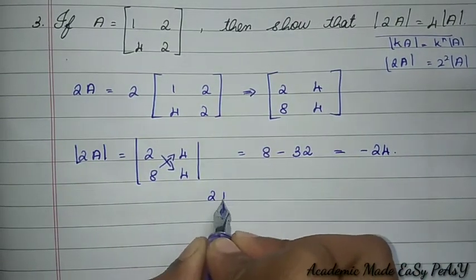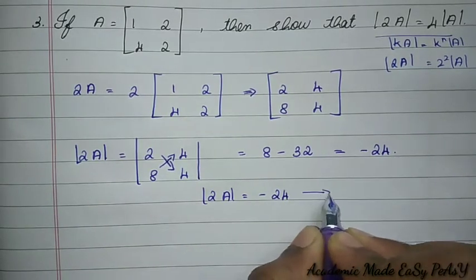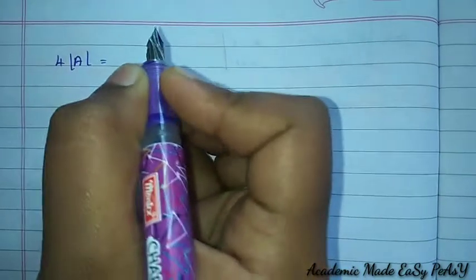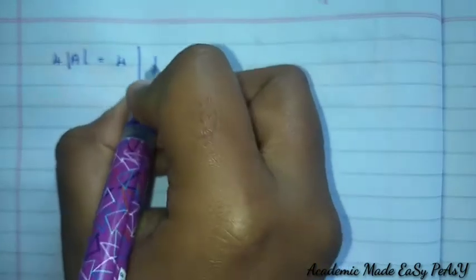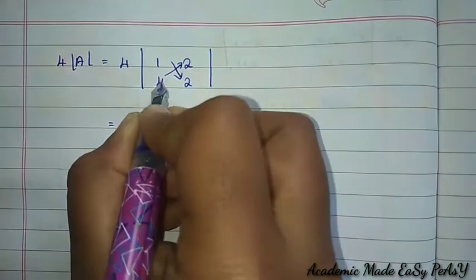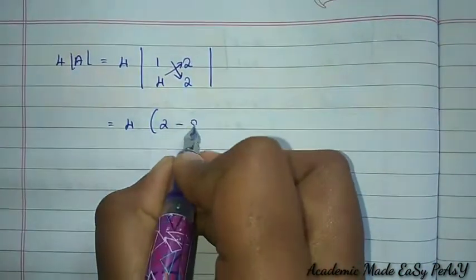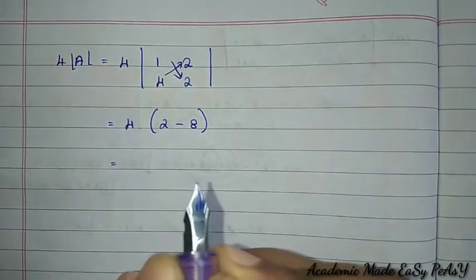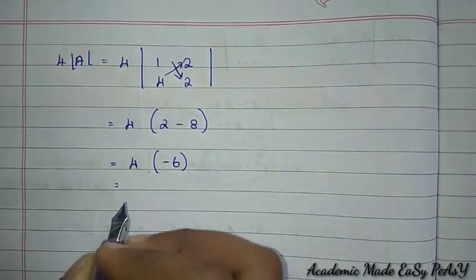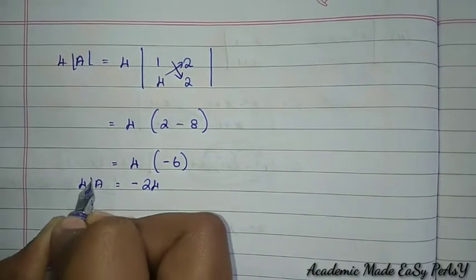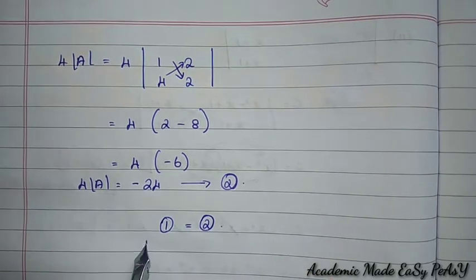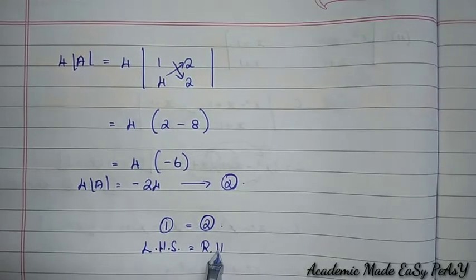So det(2A) = −24 — let this be Equation 1. Now for 4 · det(A): det(A) = 1 × 4 − 1 × 2 = 4 − 2... wait, using x method: 4 × 2 − 4 × 8 → actually 4 × (2 − 8) = 4 × (−6) = −24. Let this be Equation 2. Since Equation 1 = Equation 2, LHS = RHS, hence proved.